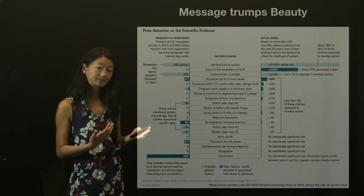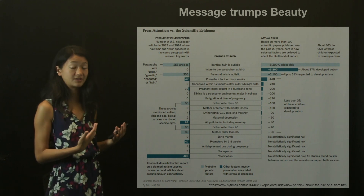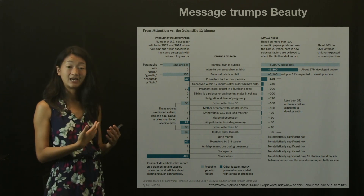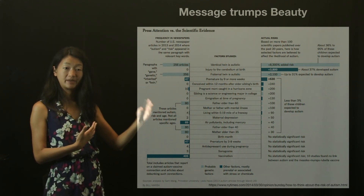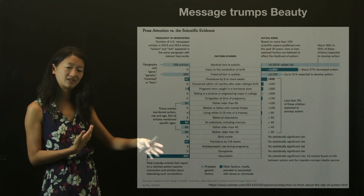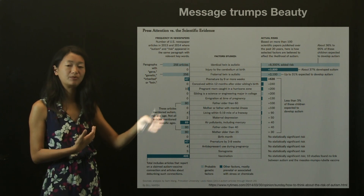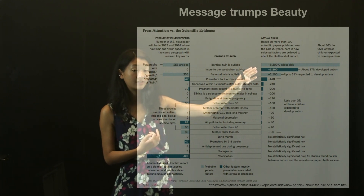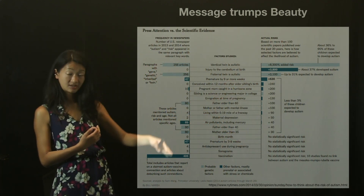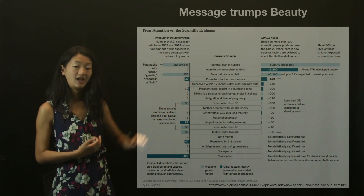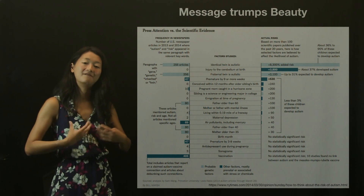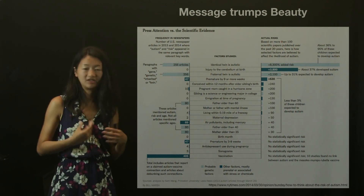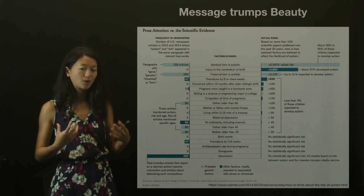Here is a visualization that compares press attention versus scientific evidence for autism risk. There are no fancy graphics, no fancy colors, but it's extraordinarily clear in communicating the mismatch between the actual risk of autism — things that are known to increase the risk of autism based on scientific evidence — versus the press coverage on each of those topics. By just conveying information clearly, you can take a lot away from a visualization. You don't have to go for the fanciest, most colorful, most eye-catching ones. Really focus on the message.